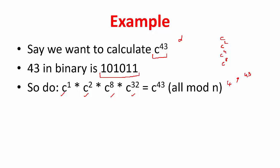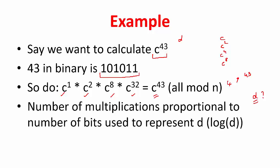So all in all, with just four multiplications, as opposed to 43 multiplications—because the value of d is 43—you were able to calculate this particular value. So this number of multiplications you are doing will be proportional to what of d? That is right, it will be proportional to the number of bits used to represent d, that is log of d.